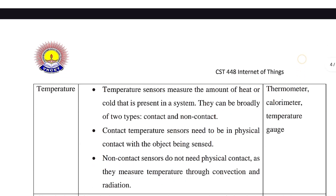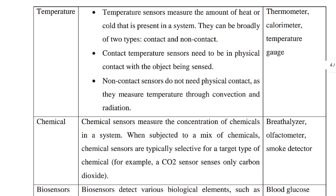The temperature sensor measures the amount of heat or cold present in a system. Temperature sensors can be broadly of two types: contact and non-contact. Contact temperature sensors need physical contact with the object, while non-contact sensors measure temperature through convection and radiation. Examples include thermometers and calorimeters.